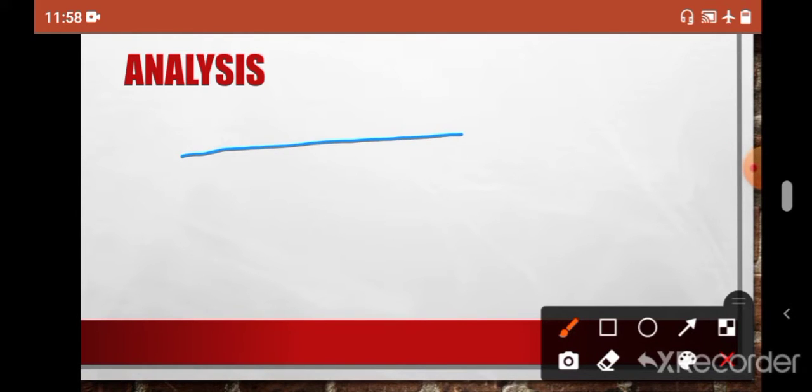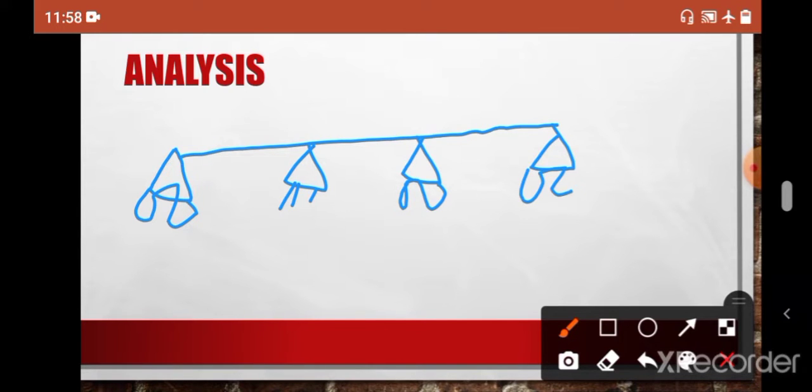So this is continuous beam and it is indeterminate. To make it determinate, what you have to do: you have to put two internal hinges.